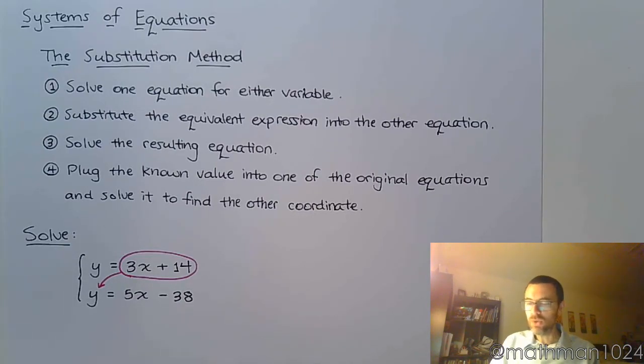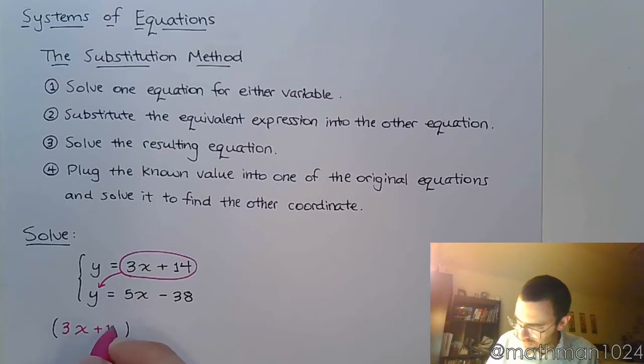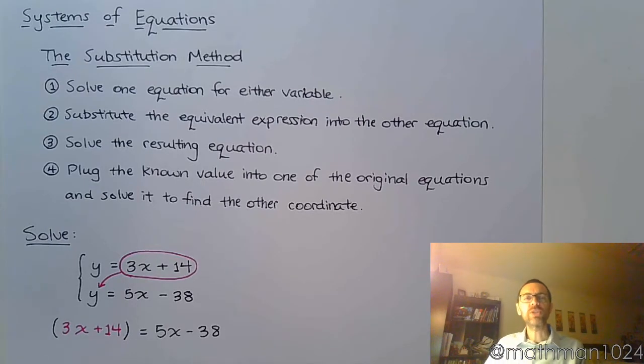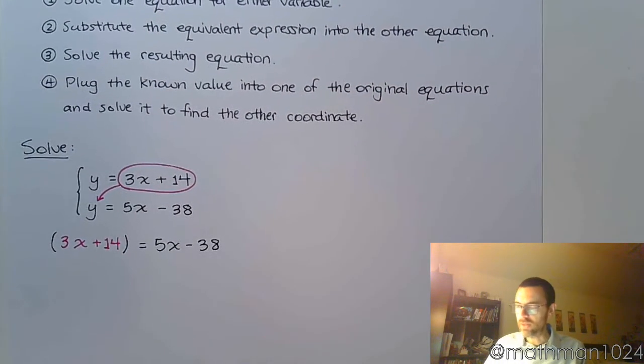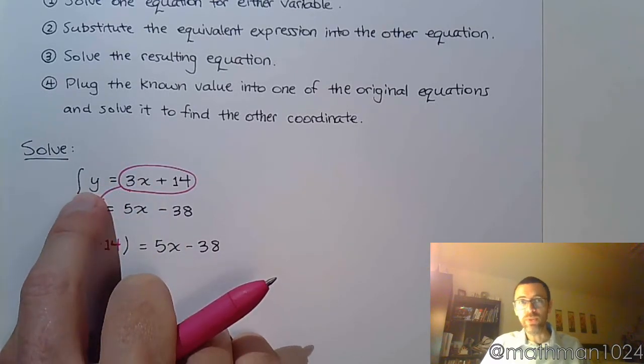When you do your substituting, you just want to make sure that you use parentheses. I'm going to replace the y with parentheses down here. I'm going to plug in 3x plus 14, and this is equal to 5x minus 38. We just make a substitution. We replace this y right here with 3x plus 14 because at the very beginning we see that y equals 3x plus 14, so any other place that I see y, I can make that substitution.